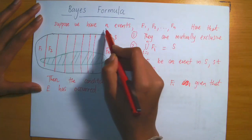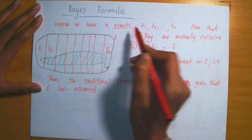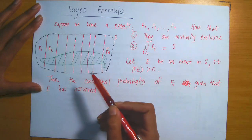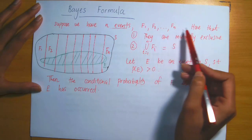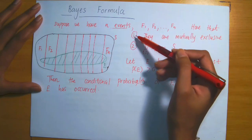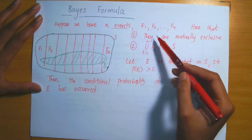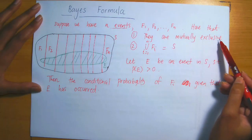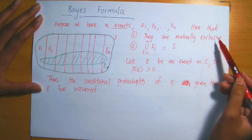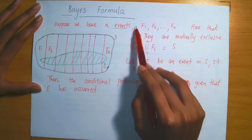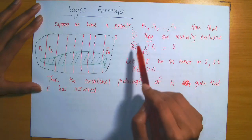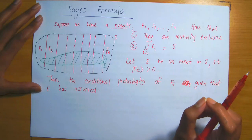In particular, suppose that we have N events, labeled F1 to FN. Suppose that these N events, F1 to FN, satisfy two conditions. The first is that they are mutually exclusive, meaning that they are disjoint, or that the intersection of any pair of events from F1 to FN is empty.